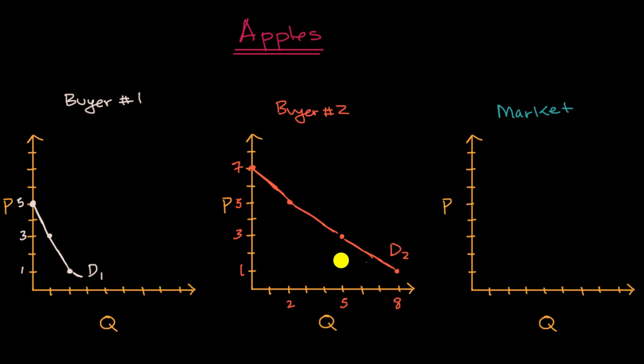Well, if we go to the various prices, at a price of seven dollars, there is not going to be any interest in any apples. So I could maybe put that right over there at a price of seven dollars. But what happens as the price goes down? And we could just sample what happens when we get to a price of five dollars. Buyer one is still not interested, but buyer two is now willing to buy two pounds per week.